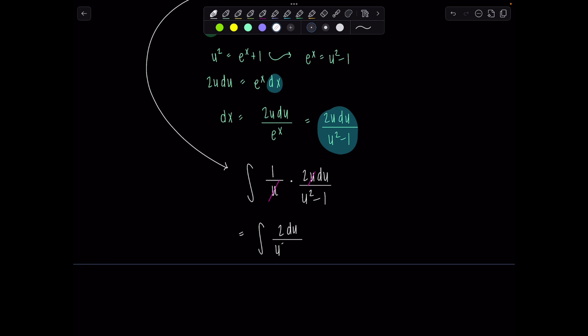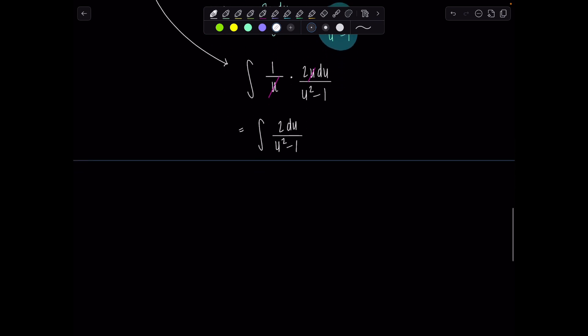Now, some of my students have memorized what the antiderivative would be at this step. In case you haven't, all you would need to do is factor and find the partial fraction decomposition of the integrand. You could also do a substitution, but I don't think it's necessary, like a trig one. Okay, so let's go ahead and find the partial fraction decomp.